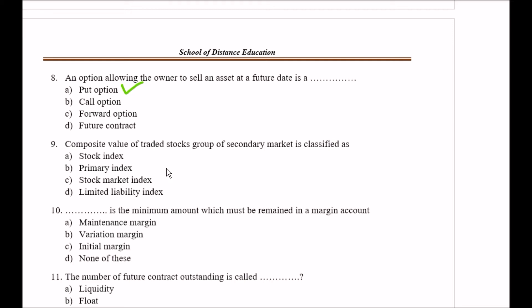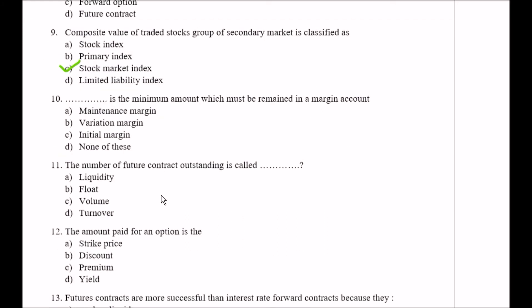Option C stock market indexes, Option D limited liability indexes. Here your right option is Option C, that is stock market index. Question ten: Blank space is the minimum amount which must be remained in a margin account. Option A maintenance margin, Option B variation margin, Option C initial margin, Option D none of these. So here your right answer is Option C, that is initial margin.